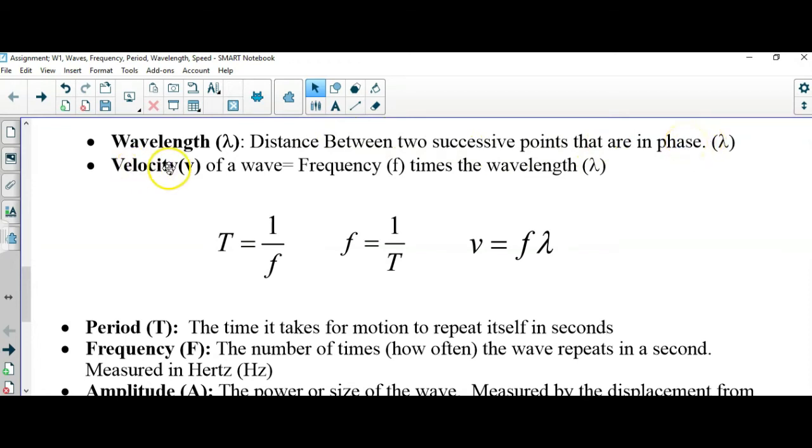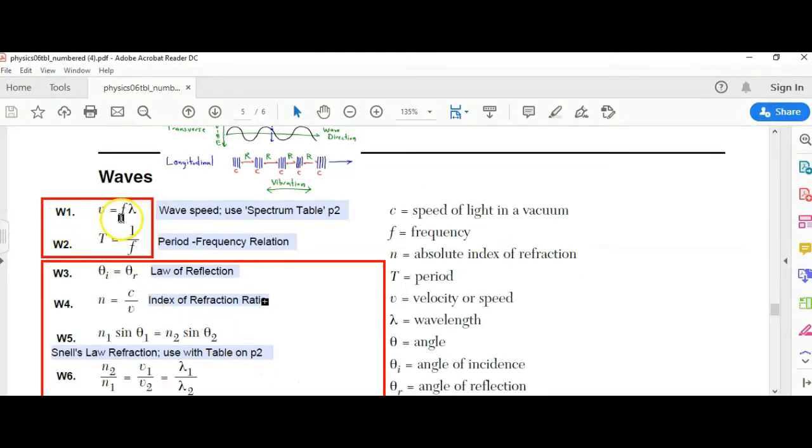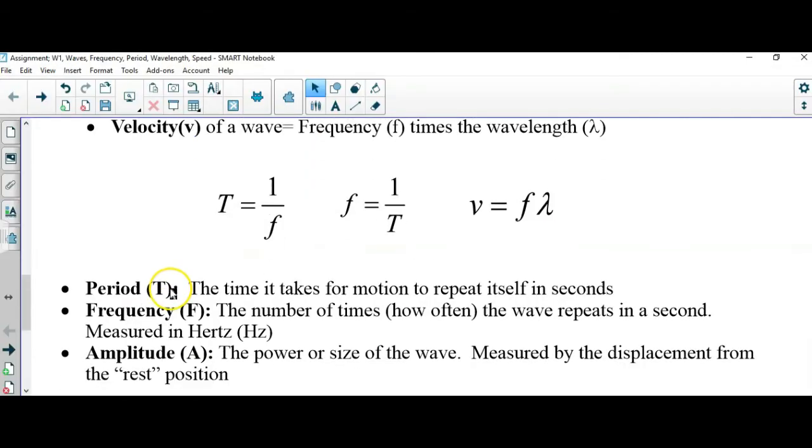The velocity of a wave is the frequency times the wavelength, and that's a direct formula right off the reference table that is formula W1. The period, well we'd like to really call this the time period because this is the time it takes for motion to repeat itself and we measure this in seconds.